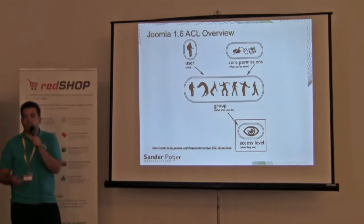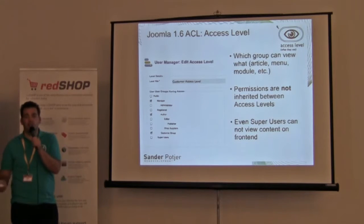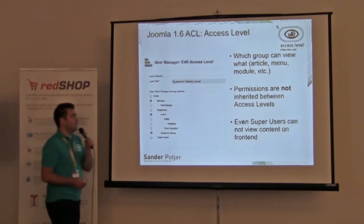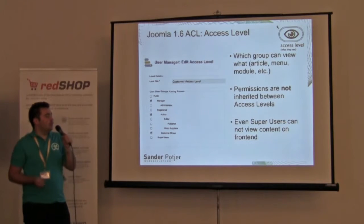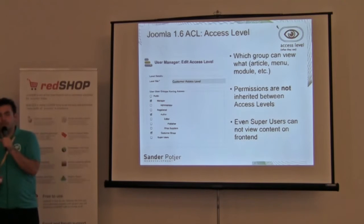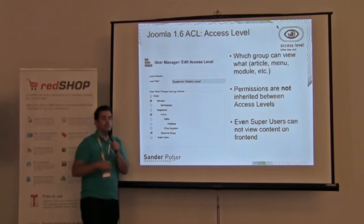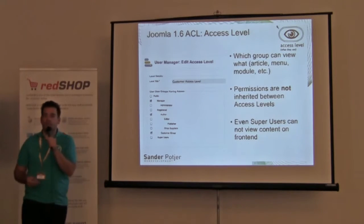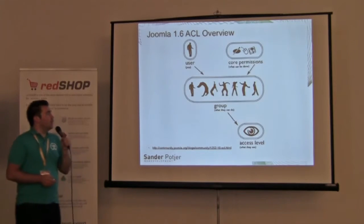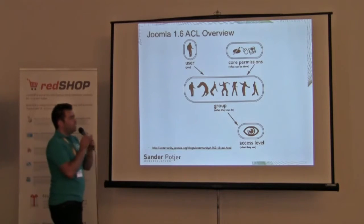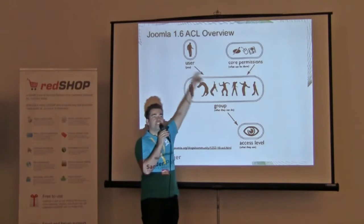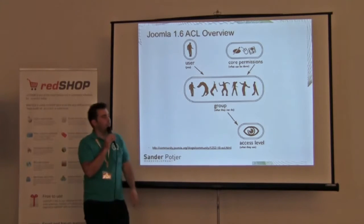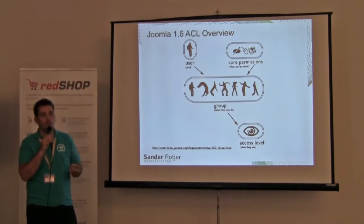The last part is the access level — what a user is able to see: a specific menu item, a module, for example. We define all these access levels ourselves and assign user groups to those viewing levels. An important thing to keep in mind: if you have a super user group and don't assign them to a specific viewing level, the super user isn't able to see that content on the front end. All settings go via the user group — core permissions are given to the group, not directly to the user.